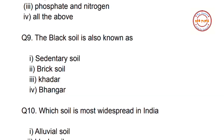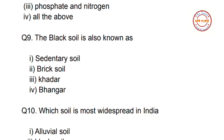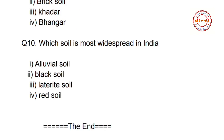Question number nine: black soil is also known as — first option: sedentary soil; second option: regur soil; third option: kather; fourth option: bhangar. The correct answer is option one — black soil is also known as sedentary soil.